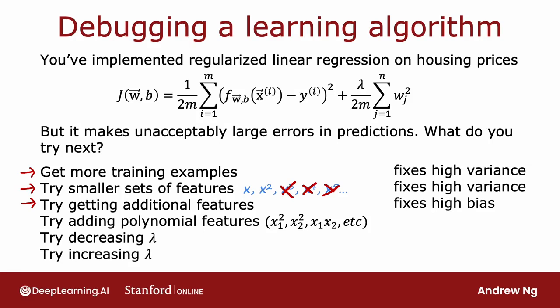and on the number of floors, and on the age of a house, then the algorithm will never do that well unless you add in those additional features. So that's a high bias problem because you just can't do that well on the training set when you know only the size.